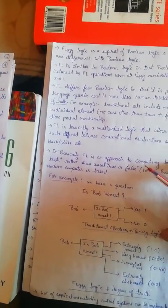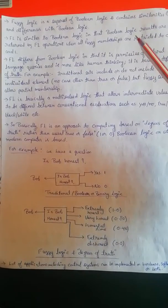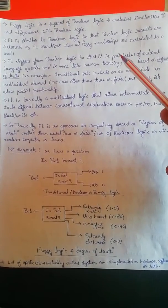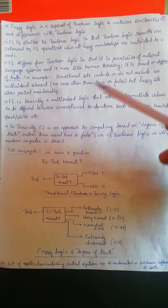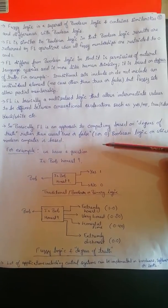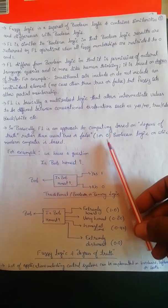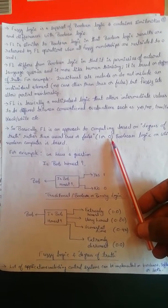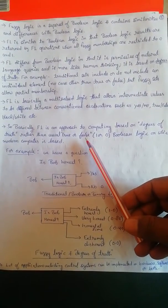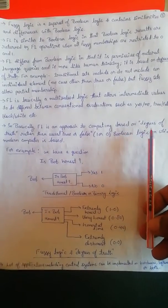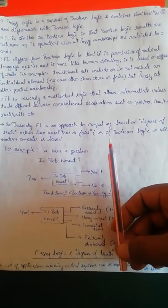I'll give you an example — fuzzy logic and Boolean logic have things in common, but they are also different. In Boolean logic you have only two answers: either one or zero. Your answer is either true or false. But in fuzzy logic it depends on the degree of truth rather than zero or one.